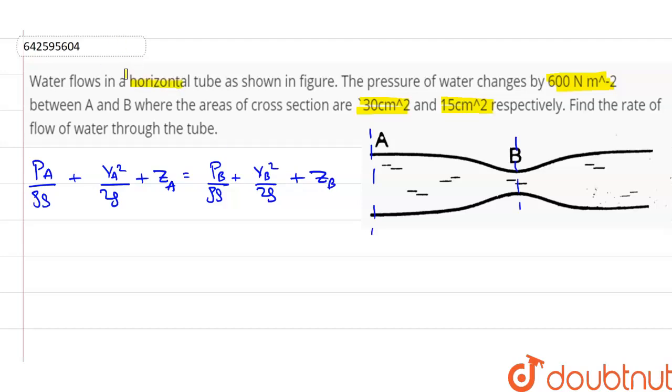Since we are given that the tube is horizontal, Z_A will be equal to Z_B. Therefore, these two values will be removed from the equation. Now, rearranging the equation, P_A minus P_B by rho g is equal to V_B square minus V_A square by 2g.